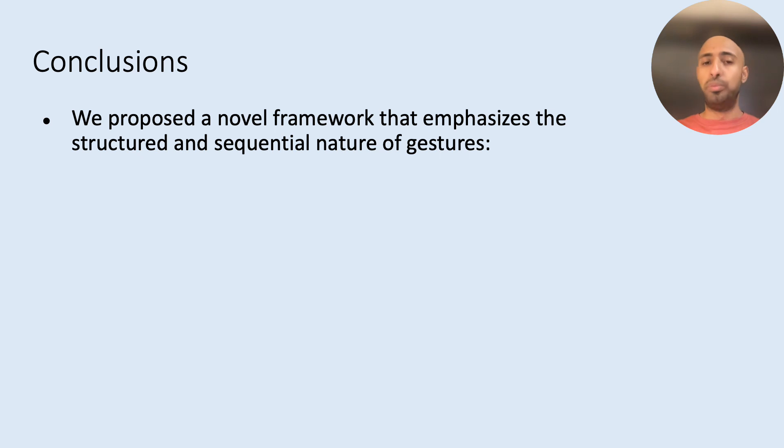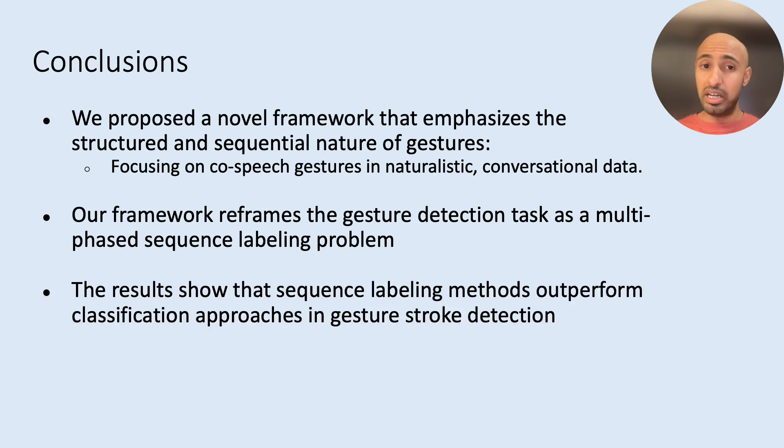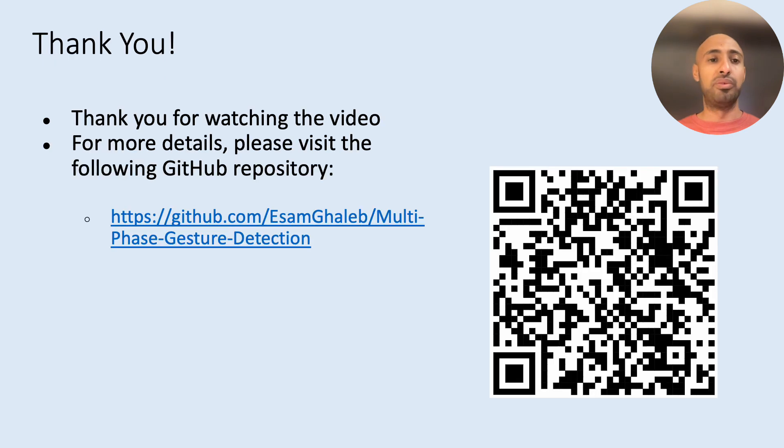To conclude, we propose a novel framework that emphasizes the structured and sequential nature of gestures focusing on co-speech gestures in naturalistic and conversational data. Our framework reframes gesture detection as a multi-phase sequence labeling problem. And the results show that sequence labeling methods outperform classification approaches for gesture stroke detection. And we hope that this novel approach helps further for gesture analysis. Thank you for listening.